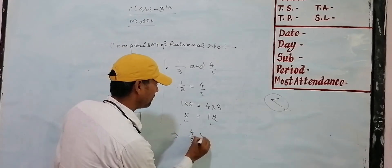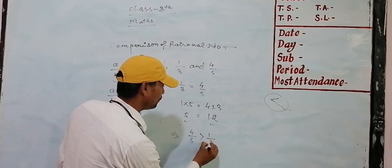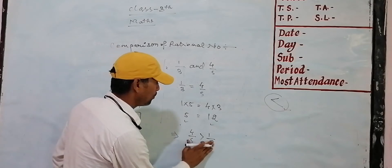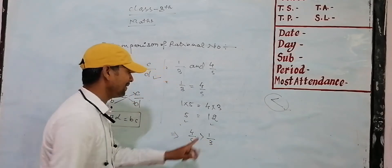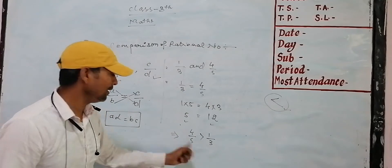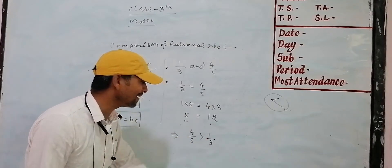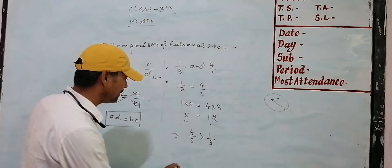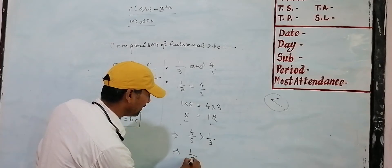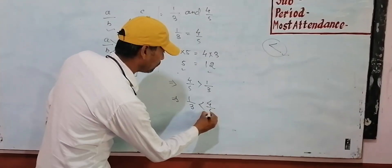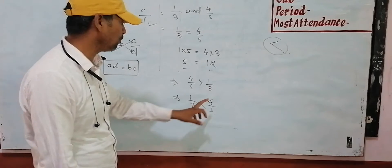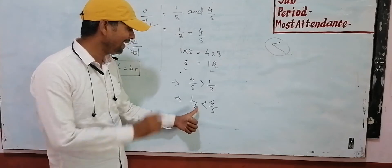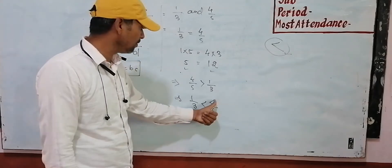Since 12 is greater than 5, we conclude that 4 by 5 is greater than 1 by 3. That means 1 by 3 is less than 4 by 5.